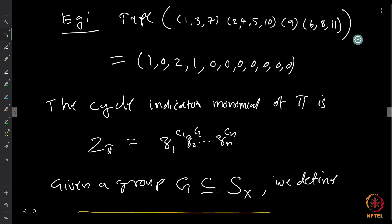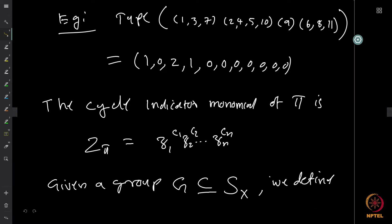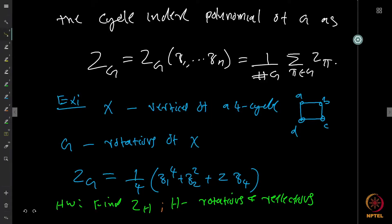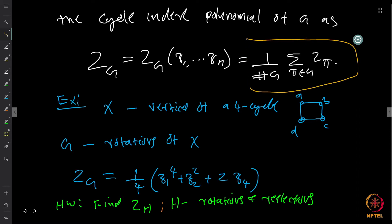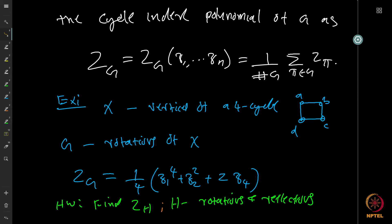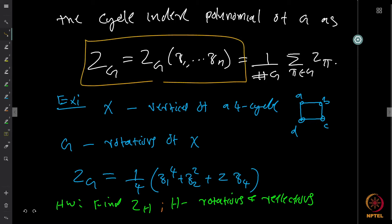Given a group of symmetries, we define the cycle index polynomial of the group as Z_G(z₁, z₂, ..., zₙ) = (1 / |G|) · Σ_{π ∈ G} Z_π — that is, the sum of all these monomials normalized by the order of G. This cycle index polynomial will be very useful for counting colorings.